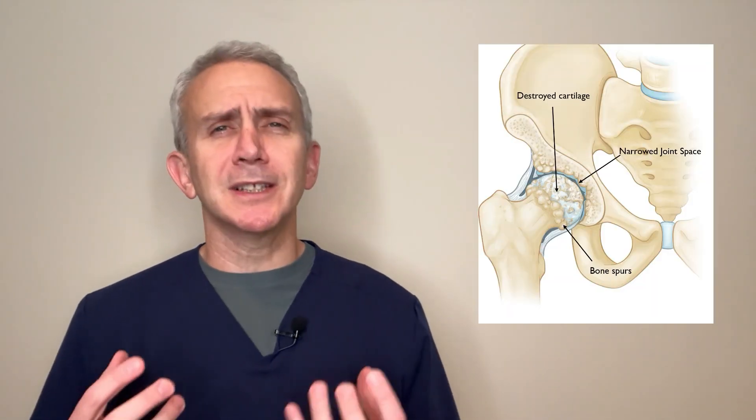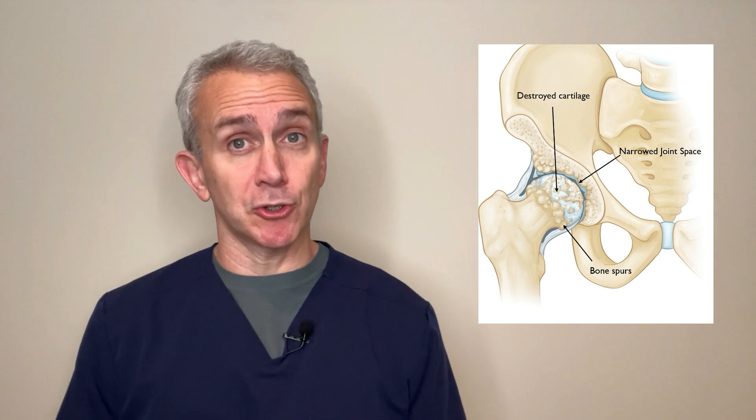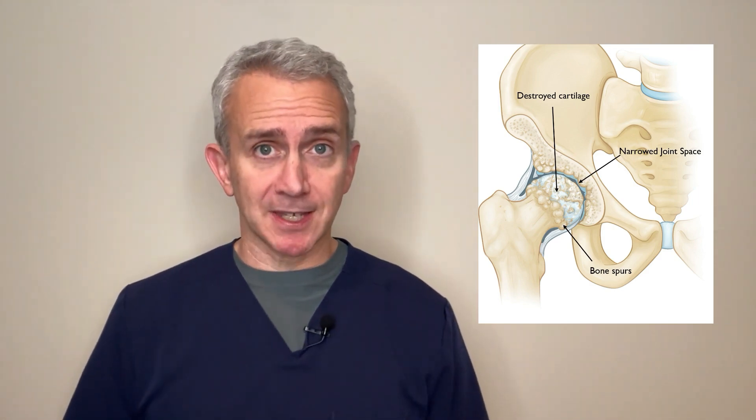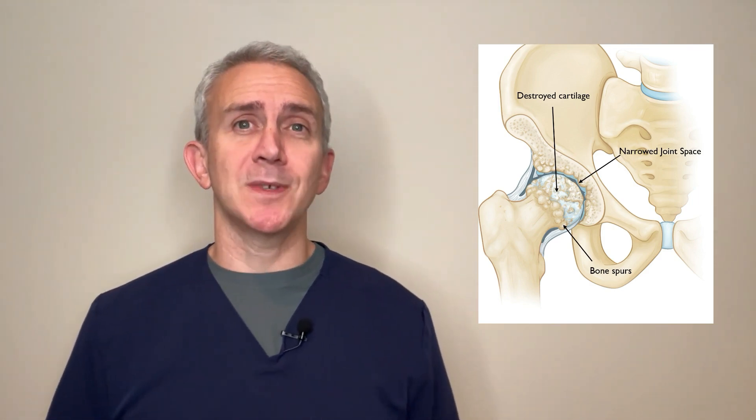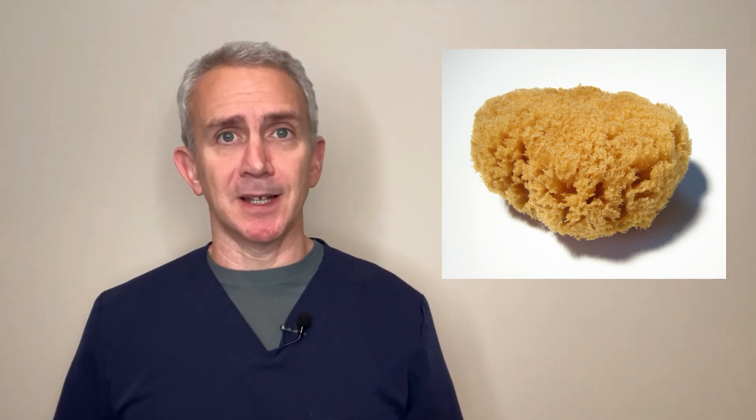Hip osteoarthritis is the degradation and the loss of cartilage in your hip joint. Cartilage is like a sponge that holds the joint fluid in your joint. When your joint's at rest, the fluid goes into the sponge. Then when you move your hip joint, the sponge is squeezed and the fluid exits the sponge and it bathes the joint. At rest, the fluid then returns back into the sponge.